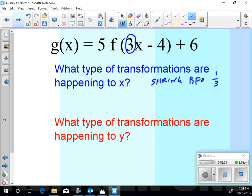It's a shrink by a factor of 1 third. Ah, tricky, tricky. Okay. And then this negative 4 is a shift which direction? 4 units. To the right 4. Now, does it matter which one happens first? Yes. It does. Which one happens first? Shift.